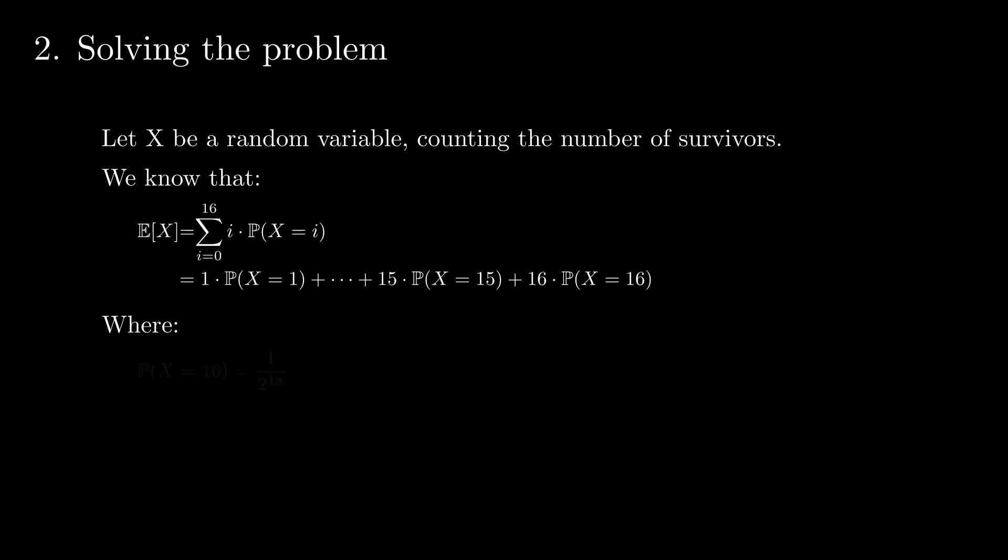Now, we can generalize this formula to any number of survivors between 1 and 16. If X equals i, then 16 minus i players were eliminated. This gets us to the probability that X equals i to be 1 divided by 2 to the power 18 times 18 choose 16 minus i, which can be seen as 18 choose i plus 2.